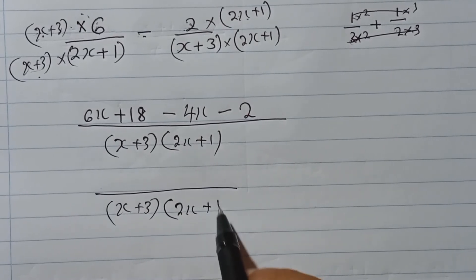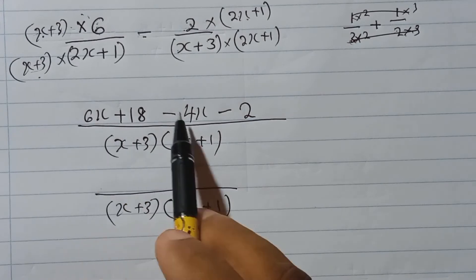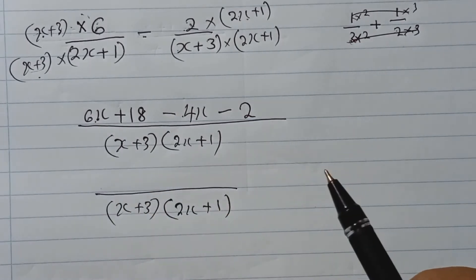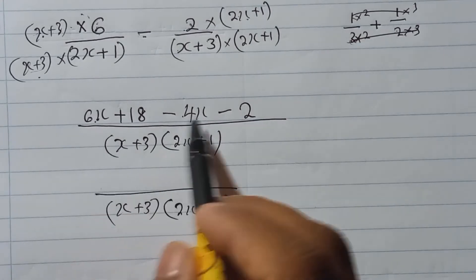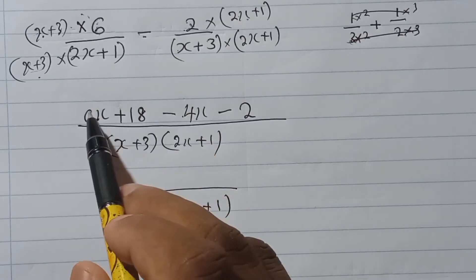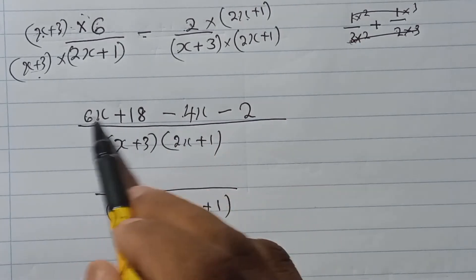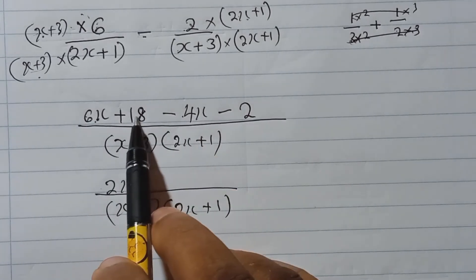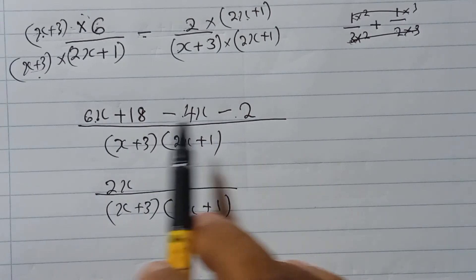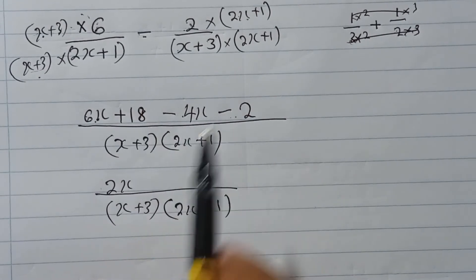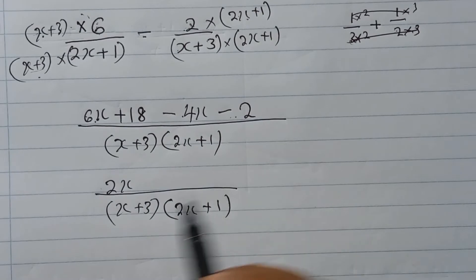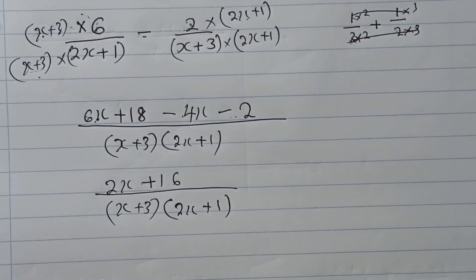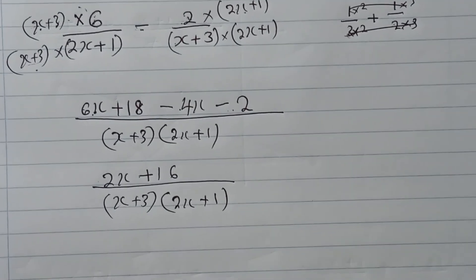So now what we have: x plus 3 and 2x plus 1 in the denominator. In the numerator: 6x minus 4x — since these are like terms, you can think of it as 6 minus 4, giving 2x. And 18 minus 2 gives plus 16. So the numerator simplifies to 2x plus 16.